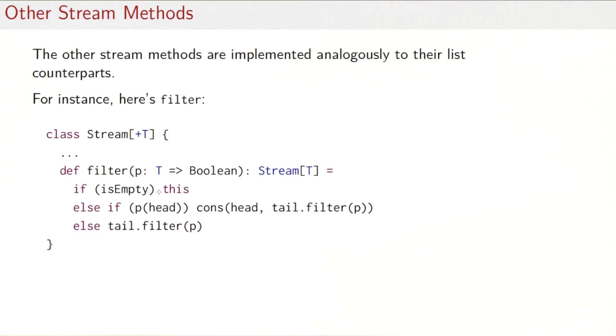That's it. The other stream methods are then implemented analogously to the list counterparts. So for instance, here you see the filter method. It does the usual thing. If the stream is empty, it returns it. If the head satisfies the predicate p, then we do a cons with head and tail filter p, and otherwise we do a tail filter p. So what in particular happens here is that if I do a filter on a stream whose head satisfies the predicate, then I do a computation tail filter p here. But that computation is the second, the tail parameter of a cons construction. So that means that the evaluation of filter down the spine of the stream will be delayed again until somebody wants to find out what the result of taking the tail of the result stream is.